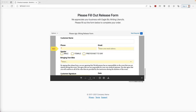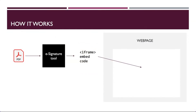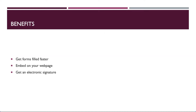The way that this works is essentially if you take a PDF form and upload that to Acrobat Sign, it'll give you back that iframe code so your developer can simply put that into the HTML code. It's simple and easy — just a couple of steps. And the benefit is it allows you to get forms filled faster, embed it onto your web page, and capture electronic signatures.